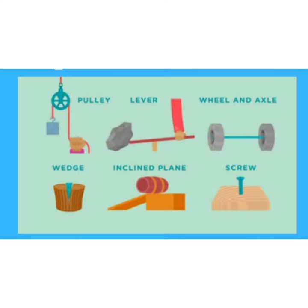About simple machines. A simple machine is defined as the simplest mechanism that uses mechanical advantage to multiply force. There are 6 different types of simple machines such as levers, pulley, wheel and axle, inclined plane, wedge and screw.